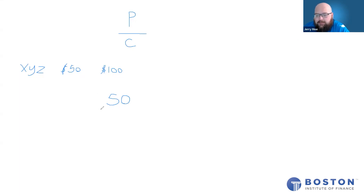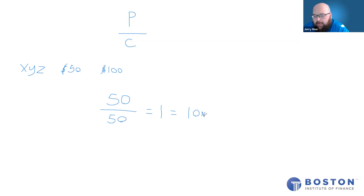They sold it for $100 and bought it for $50, so their profit was also $50. Their cost was just $50. So we got $50 in profit divided by $50 in cost. That gives us 1, which is equal to a 100% holding period return. They doubled their money — not 10%, 100%. That's pretty good for a one year's investment.